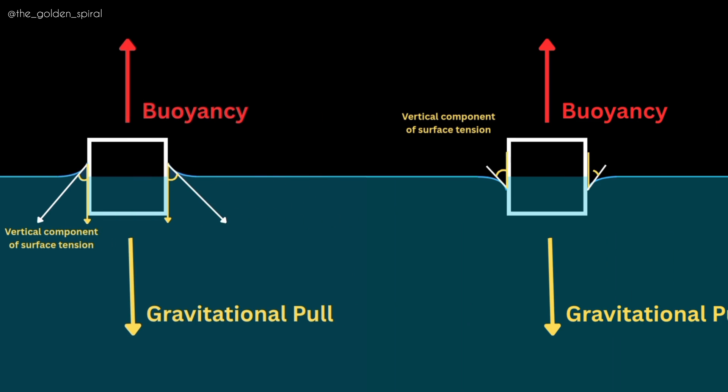Third, when objects float in liquid, they displace water until buoyancy balances the gravitational pull and the vertical component of the surface tension, either upward or downward.